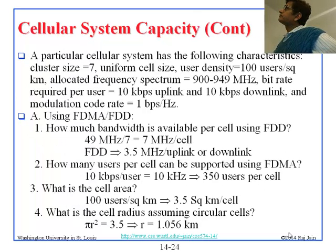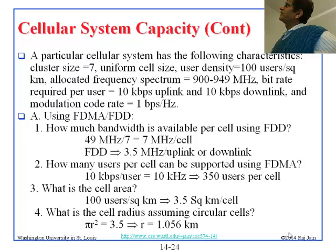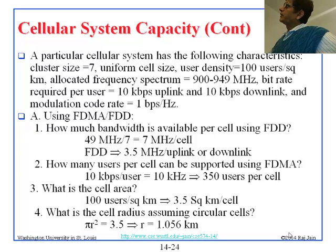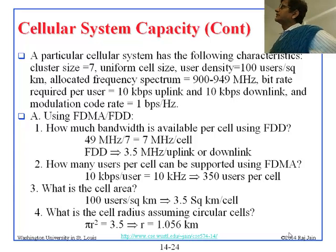Let's go to the answer. With 1 bit per hertz and 49 megahertz total in this example, dividing by a cluster of 7 gives 7 megahertz per cell. Because we are doing FDD, half goes to uplink and half to downlink, so each direction gets 3.5 megahertz. Each user needs 10 kilobits per second, which at 1 bit per hertz means 10 kilohertz per user. So 3.5 megahertz supports 350 users per cell. With a user density of 100 users per square kilometer, the required cell area is 3.5 square kilometers.